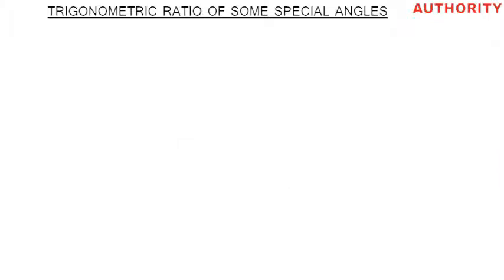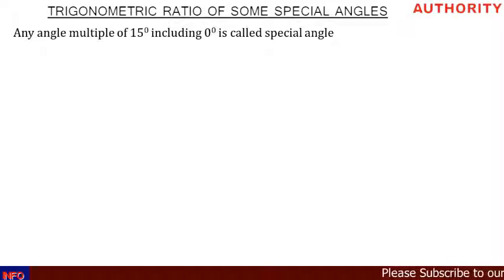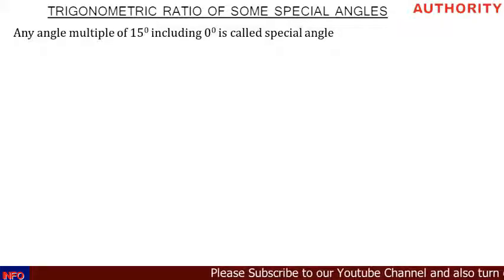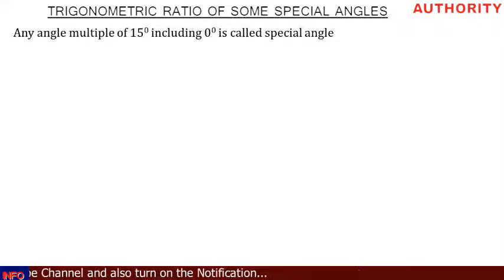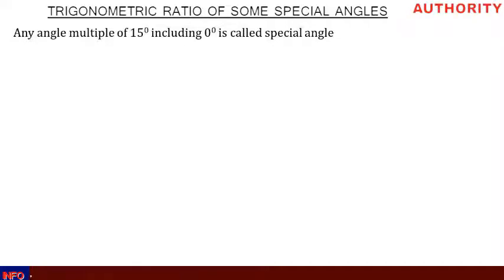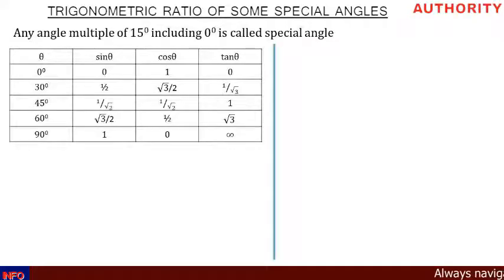Welcome. Today we want to talk about trigonometric ratios of some special angles. A special angle is any angle that is a multiple of 15 degrees, including zero degrees. So we have zero degrees, 15 degrees, 30 degrees, 45 degrees, 60 degrees, 75 degrees, 90 degrees, and so on. In this video, we are going to find the true values for sine 30 degrees, 45 degrees, and 60 degrees.